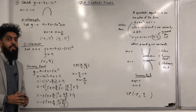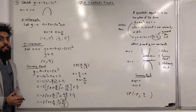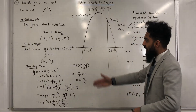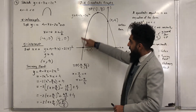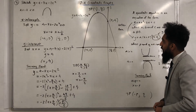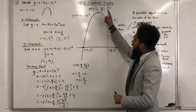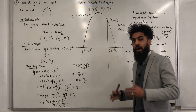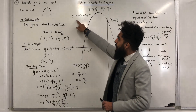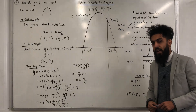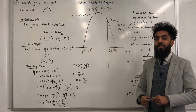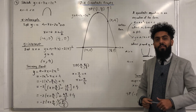Now I've got enough information to sketch my quadratic graph. Here is my quadratic graph: I've got an upside-down U-shape, my x-intercepts labelled, my y-intercept labelled, and my turning point labelled. I've also labelled the equation of the graph, y = 4 − 7x − 2x². If you found this video useful, please don't forget to subscribe.